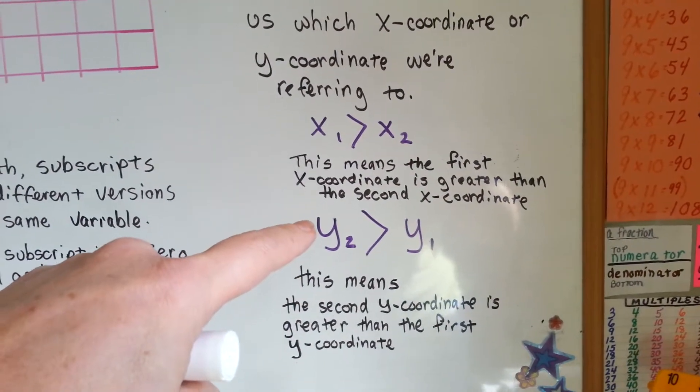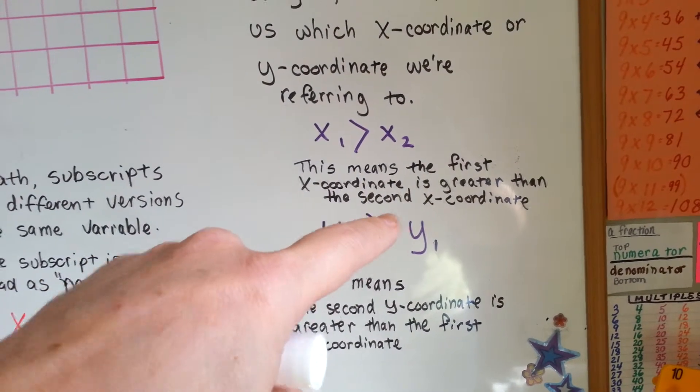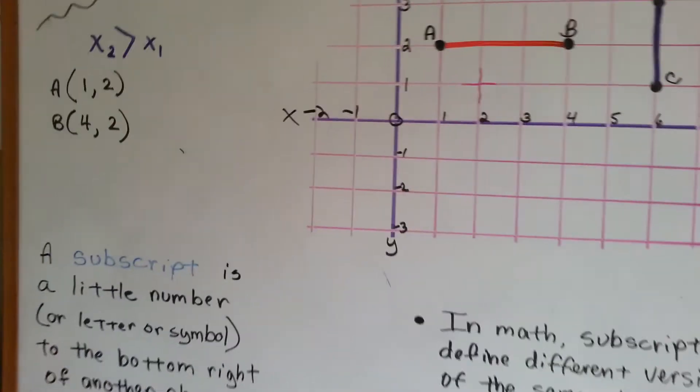If you see this, this means that the second y-coordinate is greater than the first y-coordinate. Okay, so let's take a look at this.